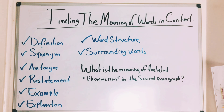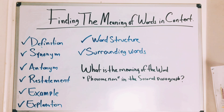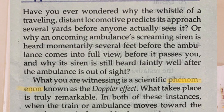In some passages, the author might give you a definition, use synonyms or antonyms to give the opposite meaning, restate the word, or give examples of it. Some genres and jargon may be unfamiliar because they're not everyday words. Also pay attention to word structure and the surrounding words. I'll insert a paragraph highlighted in yellow so you can use the context clues around it to understand what 'phenomenon' means.